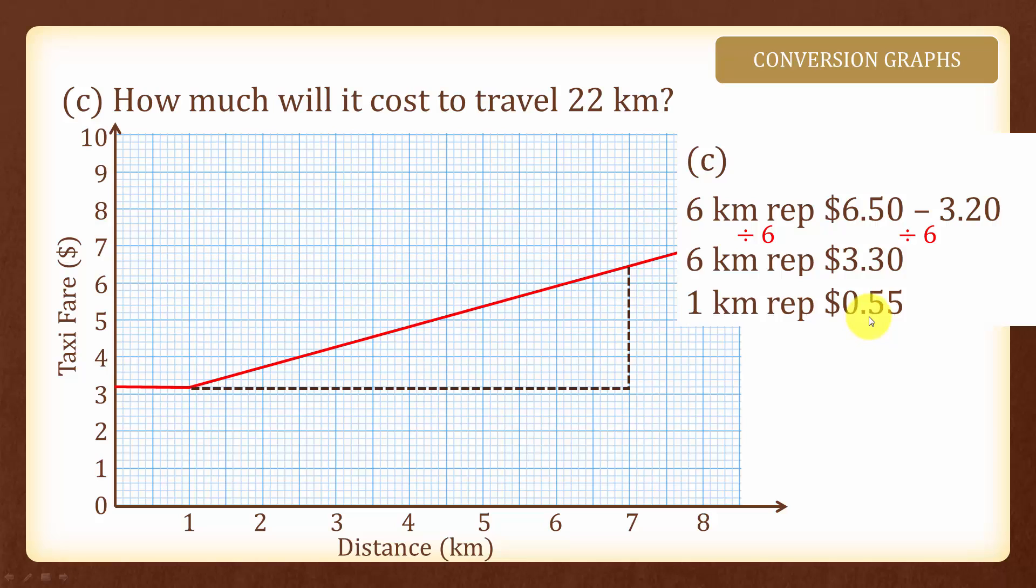And how many kilometers do we want to find? We are not finding 22 kilometers because the first kilometer, the price is fixed at $3.20. So we need to find the remaining 21 kilometers. And we can find it by using $0.55 times 21. Therefore 21 kilometers represents $11.55.